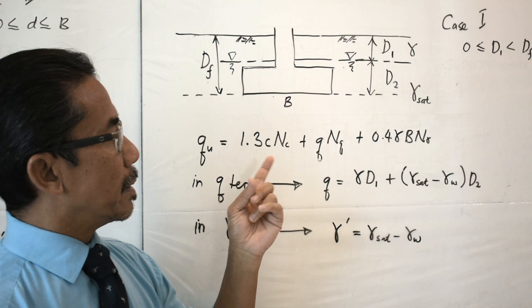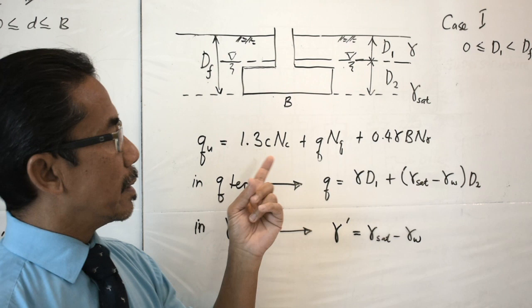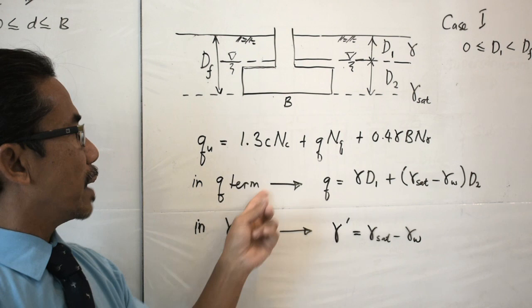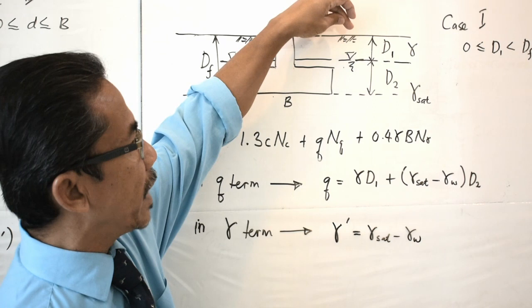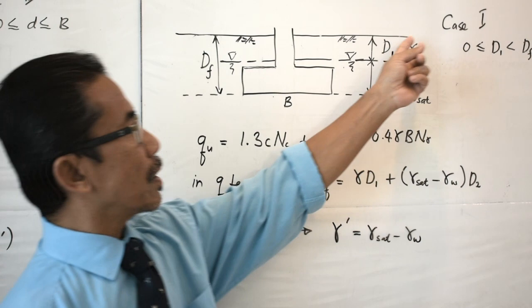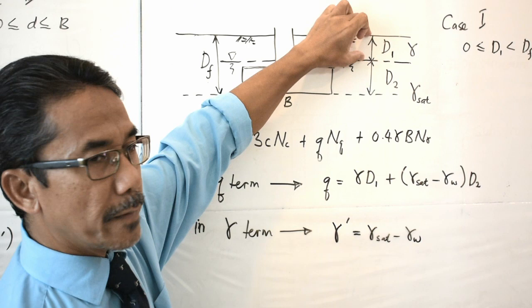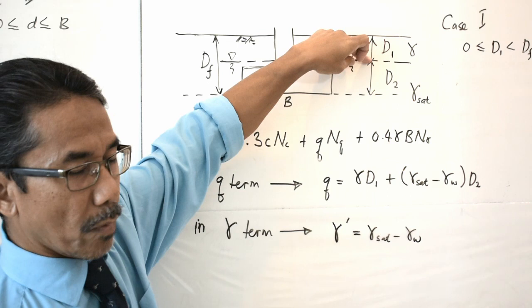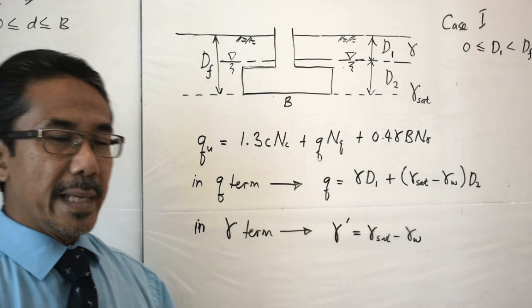When we have this condition, there are certain parameters or values that we have to change, taking into consideration the location of the groundwater table. In the q term, q is the stress at the base of the footing due to the weight of the soil from the ground surface to the base of the footing. Because of the existence of the groundwater table, we have two different unit weights — from the ground surface to the water level, and from the water level to the base of the footing.